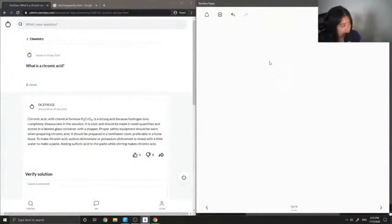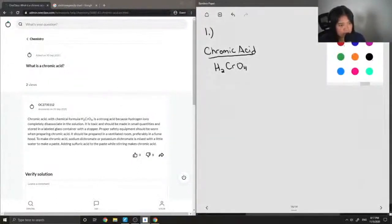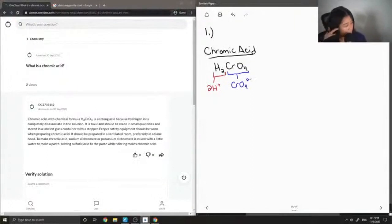Okay, so our first question asks: what is a chromic acid? Chromic acid has the following chemical formula. So basically, if I were to write these out into ions, we'd have two H+ ions and one CrO4, which is the chromate ion, and it has a minus two charge.